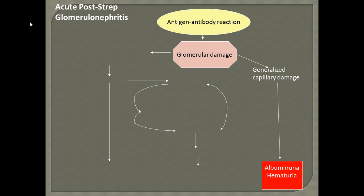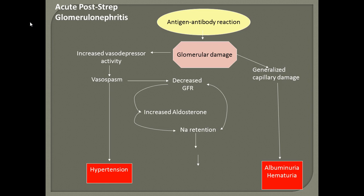The glomerular damage can also cause increased vasodepressor activity, leading to vasospasm, which in turn causes hypertension. The vasospasm can cause a decrease in GFR, which increases aldosterone and sodium retention, causing water retention and leading to edema.